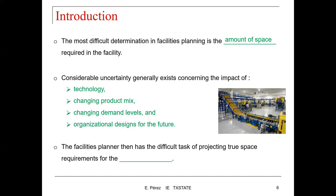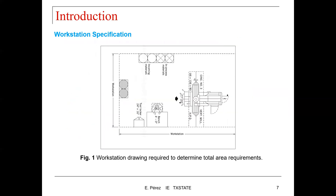The facilities planner has the difficult task of projecting the space requirements for the uncertain future. In this slide, we have the workstation specification from a previous lecture, showing some of the requirements for the design of a workstation for a single employee. As you can see, for a single workstation there is a need for a lot of space — we need space for the area where the staff will be working, some additional space for storing materials, and if the station requires a machine, then a majority of the space will be allocated for that machine.